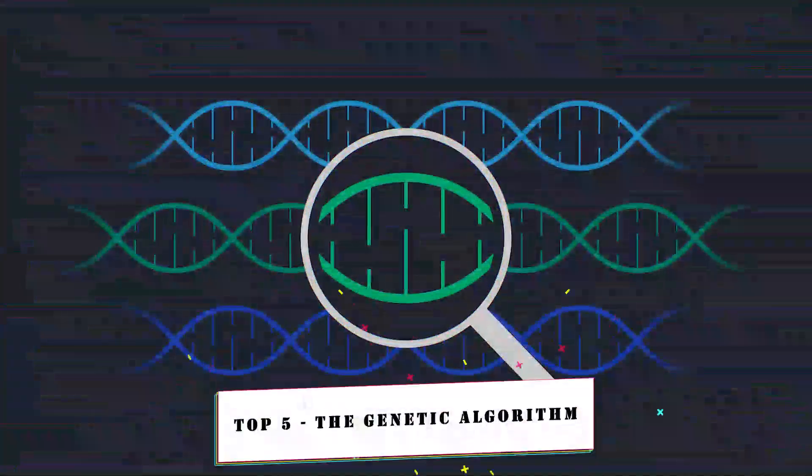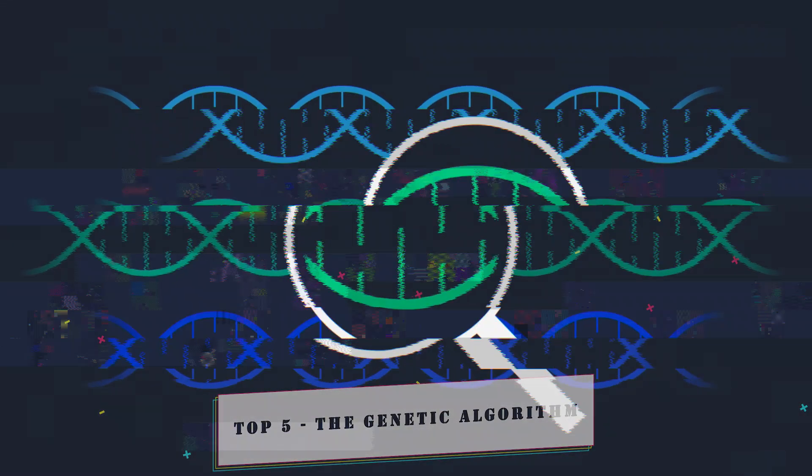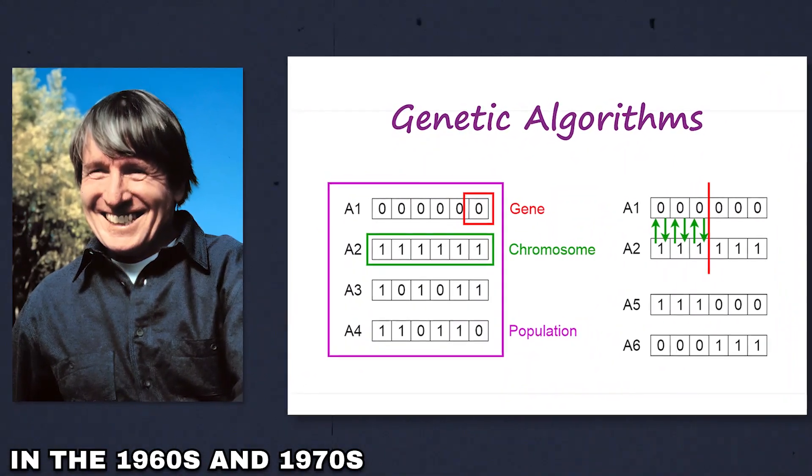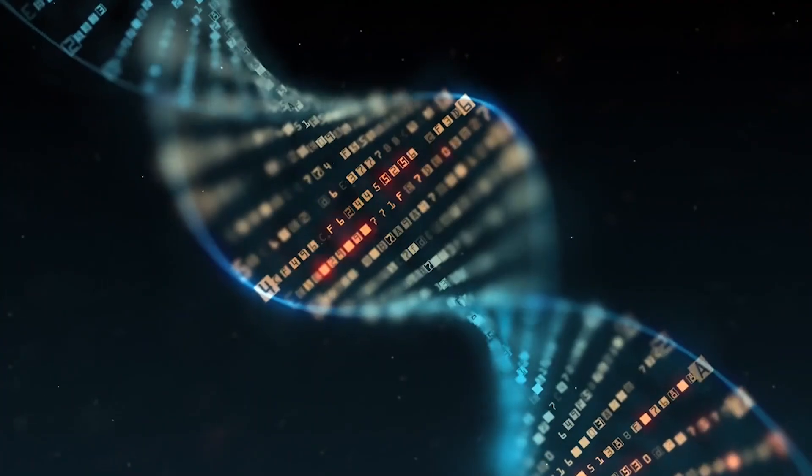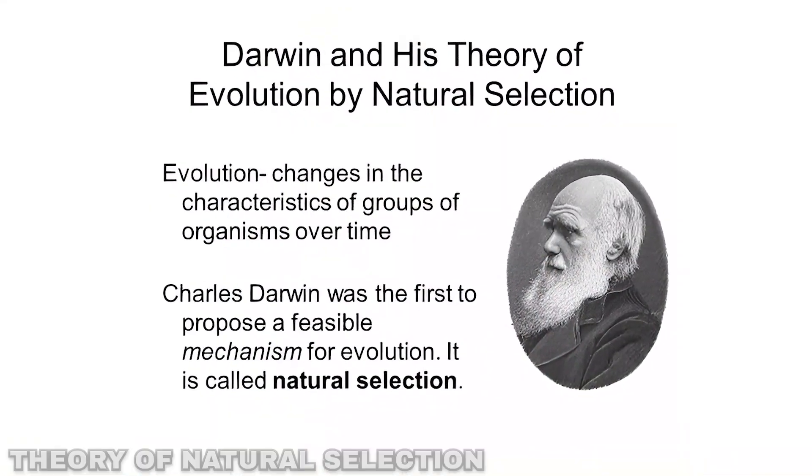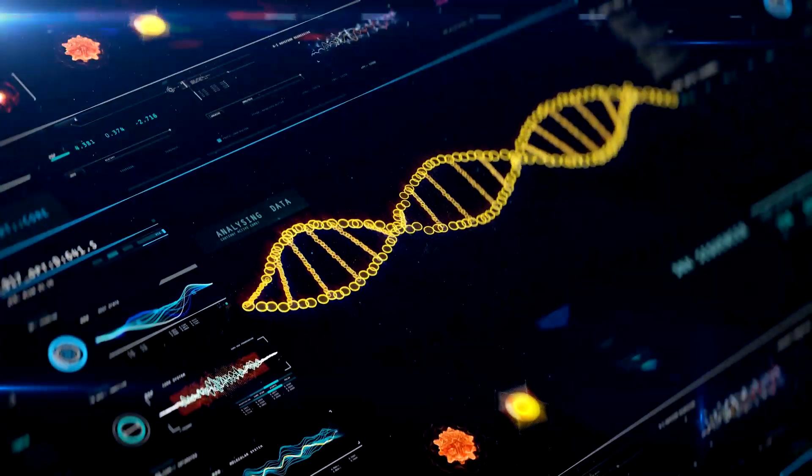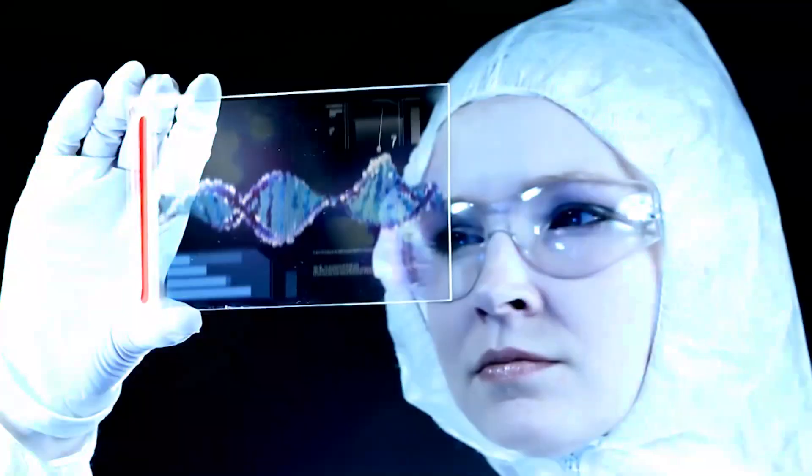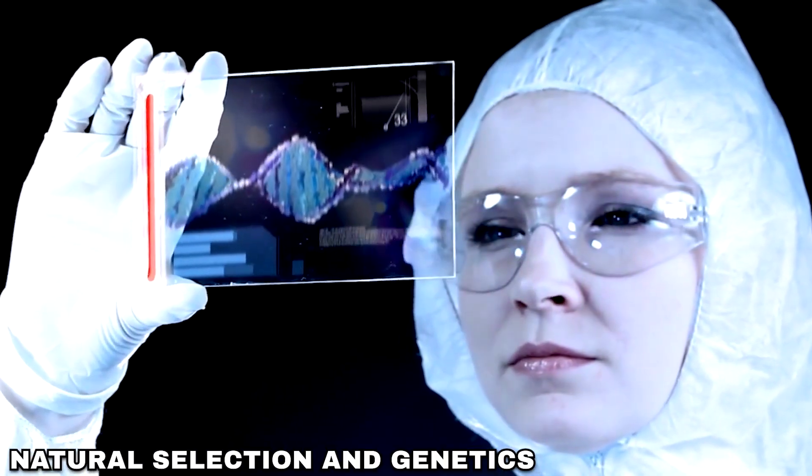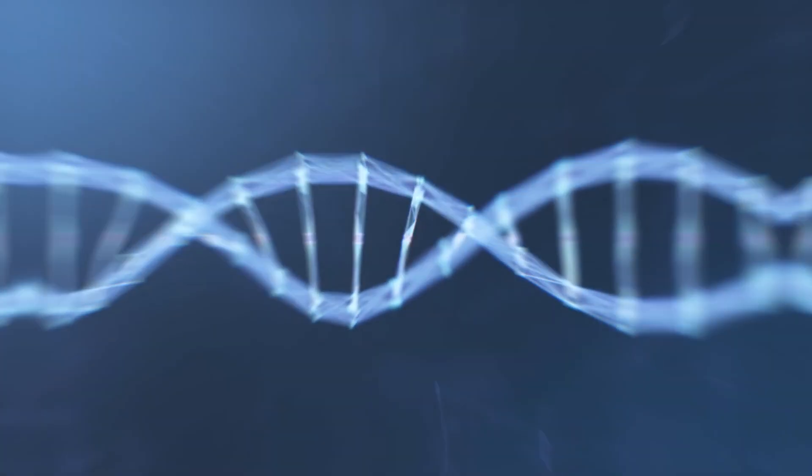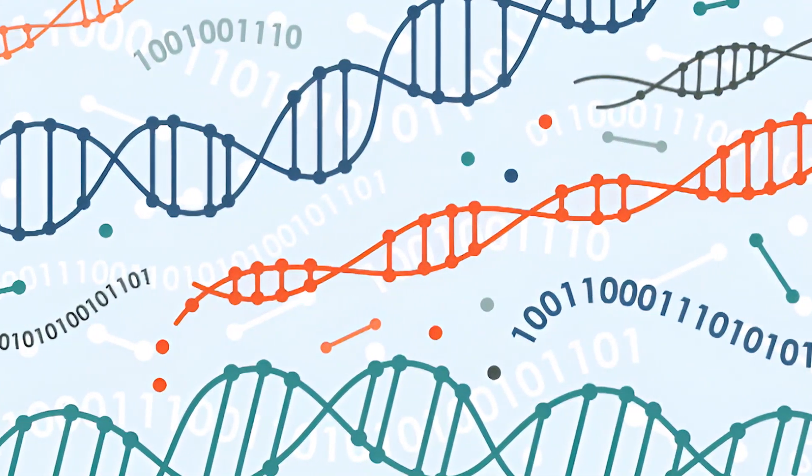Top 5. The Genetic Algorithm. The genetic algorithm, developed by John Holland and his colleagues in the 1960s and 1970s, is a model or abstraction of biological evolution based on Charles Darwin's theory of natural selection. These genetic algorithms are powerful optimization and search algorithms inspired by the principles of natural selection and genetics. Algorithms start from an initial population of potential solutions, often represented as individuals or chromosomes.